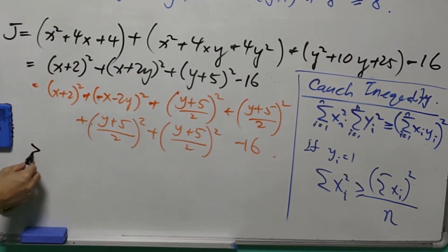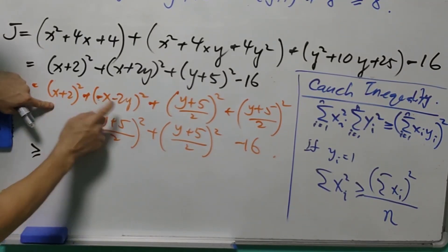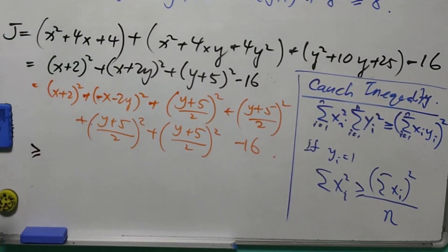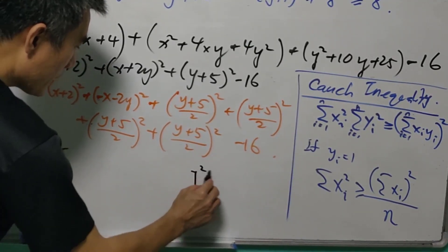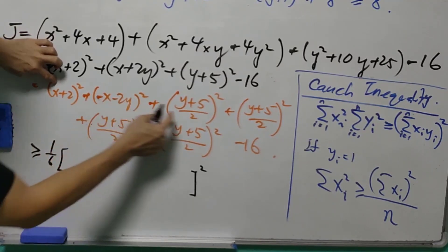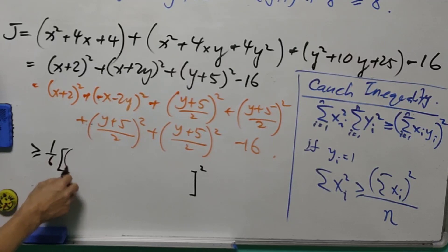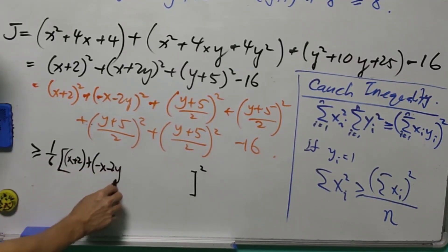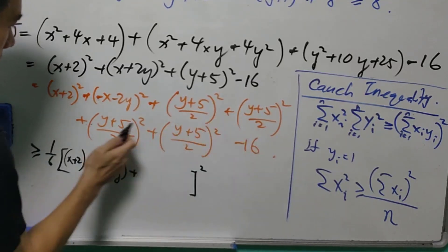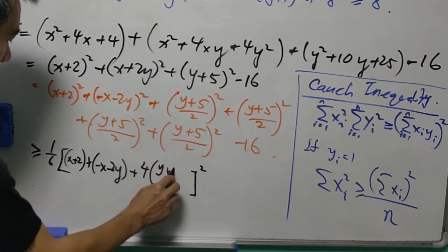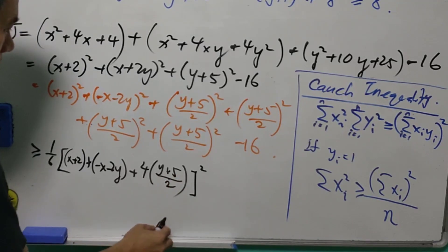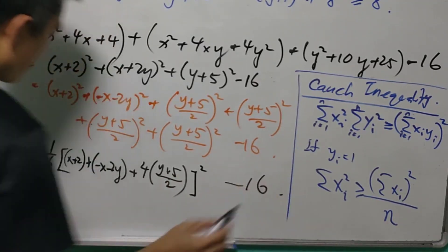Using the result there, we know that this will be greater than equals to, there are all together 6 squared. So it will be 1 over 6. And the whole thing is squared. So inside will be the sum of the terms. So it is x plus 2 plus negative x minus 2y plus there are 4 of them. So it's 4 of (y plus 5 over 2). And minus 16.